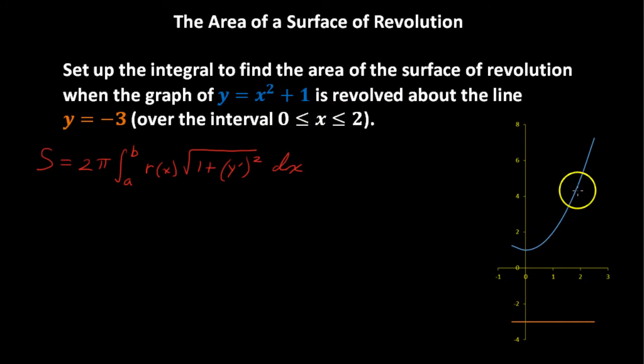I've sketched this out here. This is in blue. This is the graph of y equals x squared plus 1. The orange line, that horizontal line, is y equals negative 3. That's the line of revolution, or axis of revolution.